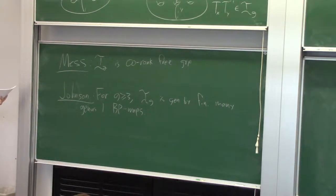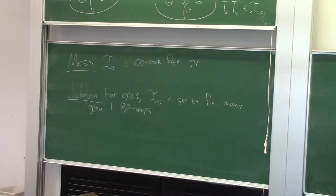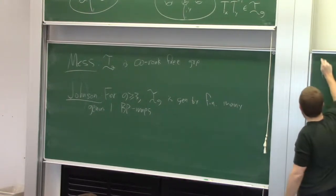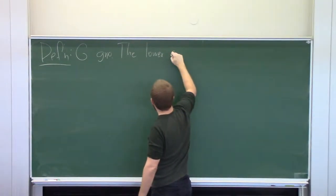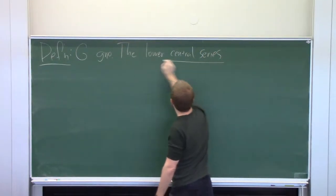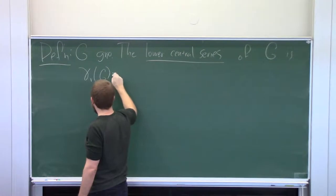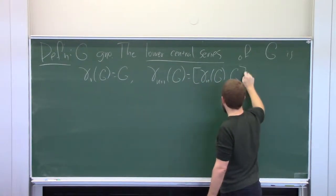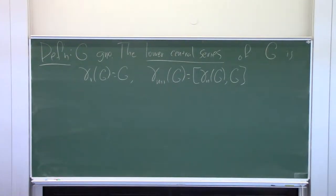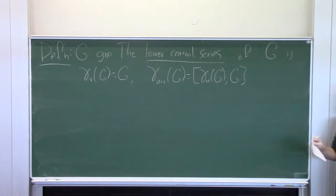It's an open question whether the Torelli group is finitely presented or not — we have no idea, and I'm not going to hazard a guess. What I'm interested in are not just the Torelli group but its subgroups. There's an important sequence of subgroups: the lower central series of G, where gamma_1(G) = G itself and gamma_{n+1}(G) = [gamma_n(G), G]. So gamma_2 is the commutator subgroup. I'm interested in the lower central series of the Torelli group — each of those goes deeper and deeper, forming a sequence of infinite index subgroups, so they have less and less reason to have good properties.